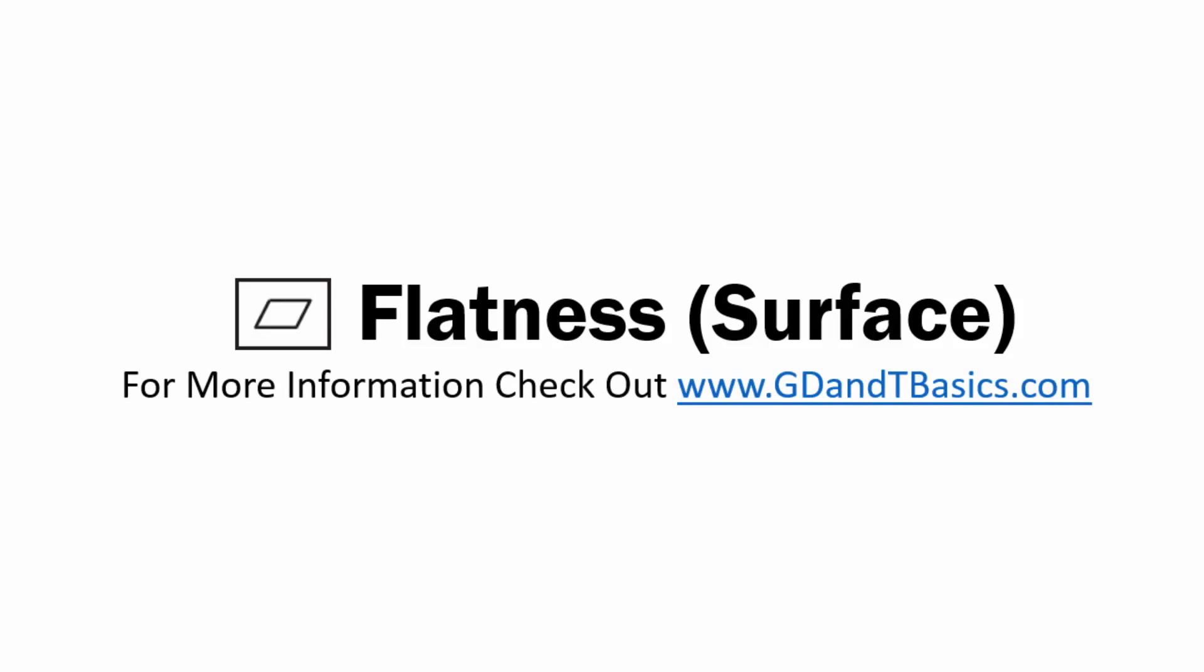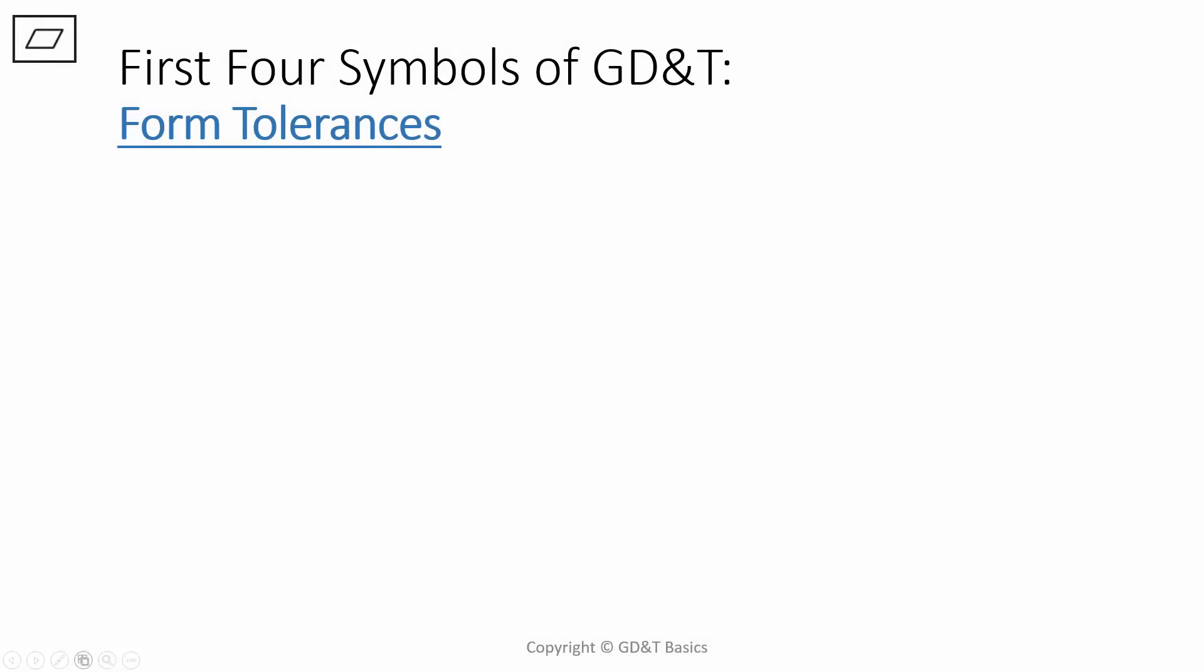For more information, be sure to check out our website gdntbasics.com. Flatness is among the first four symbols on your GD&T chart, known as the form tolerances.